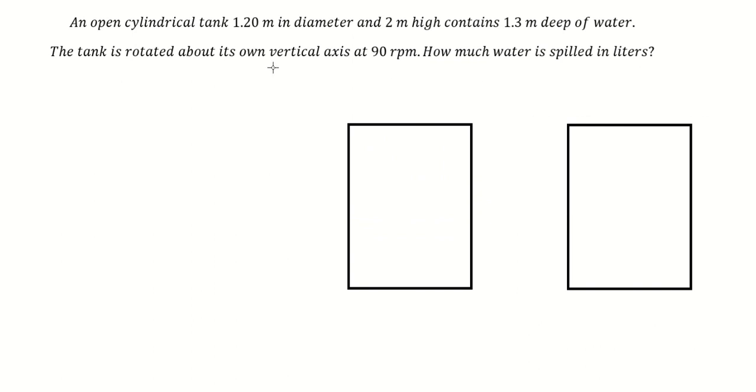So before we rotate, we know that the height of the water is about 1.3 meters, and the height of the cylinder is about 2 meters. The diameter is about 1.2 meters, so we have like this.